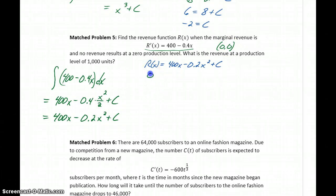So if we plug in zero for our total revenue, and then zero for each of our x values, 400 times zero will give us zero, minus 0.2 times zero will give us zero, plus c, which means that our constant in this case is equal to zero.